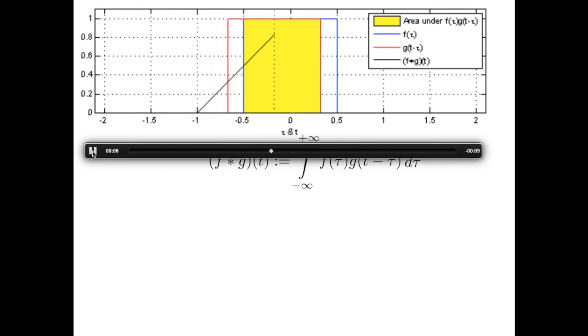You see that the area is increasing until it is maximum, and then it's decreasing as the red triangle is sliding away. So you see here that convolving together two rectangle functions leads to another function, which is a triangular-shaped function. And then it is zero anywhere else.